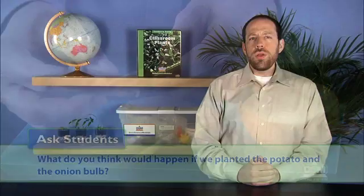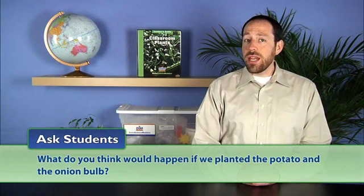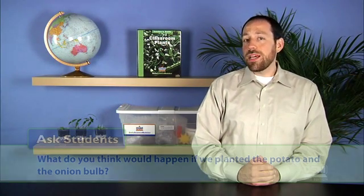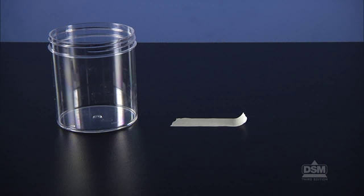Then ask, what do you think would happen if we planted the potato in the onion bulb? Accept all reasonable predictions. Divide the class into teams of four and distribute potatoes to one half of the teams and onions to the other half. Give each team a clear plastic jar, a piece of masking tape for a label, and three toothpicks.